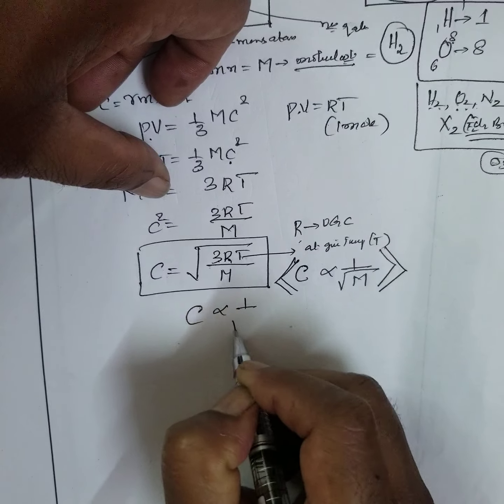Coming back to the problem: at what temperature is the RMS velocity of gaseous hydrogen equal to that of oxygen at 47 degrees? Note that they specify gaseous hydrogen, since liquid hydrogen also exists. The problem means: velocity depends on temperature — at higher temperature velocity is more. At what temperature does hydrogen's velocity equal oxygen's velocity at 47 degrees?